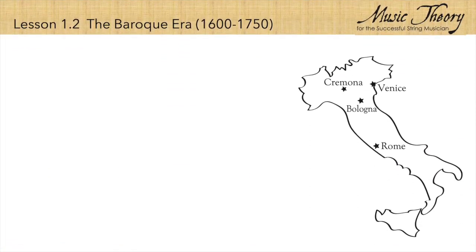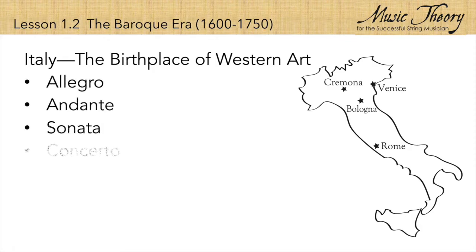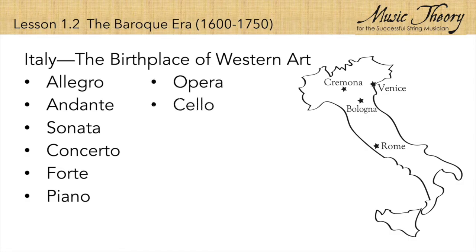Italy was the center of the world of string music from the 1300s all the way through the Baroque era. It was the birthplace of the violin family, the opera, the sonata, and the concerto, and it was home to some of the earliest successful musical performers and composers. As a result, Italian became the professional language of musicians, which is why so many musical words, like sonata and concerto, and even common English words like opera, cello, virtuoso, and solo, are rooted in Italian.